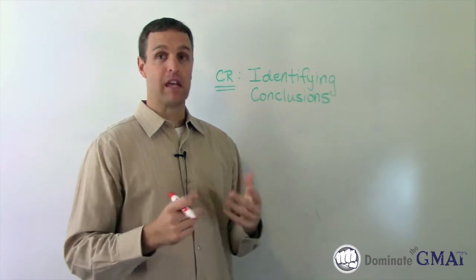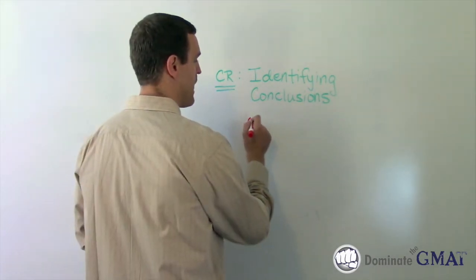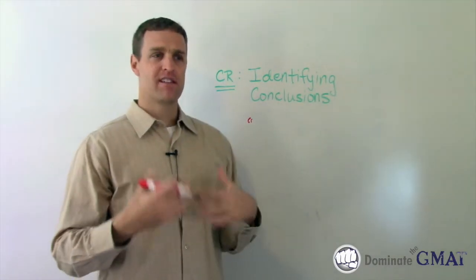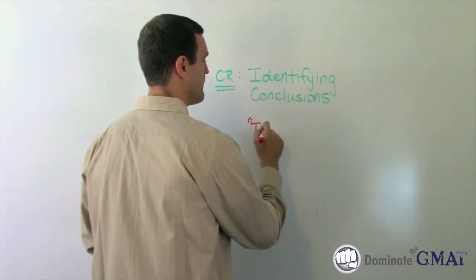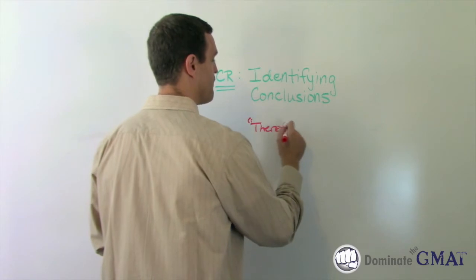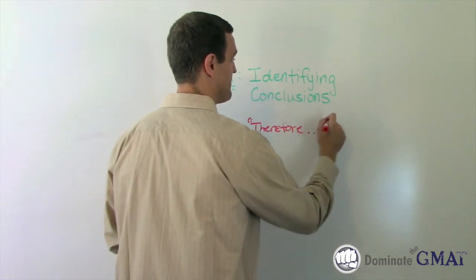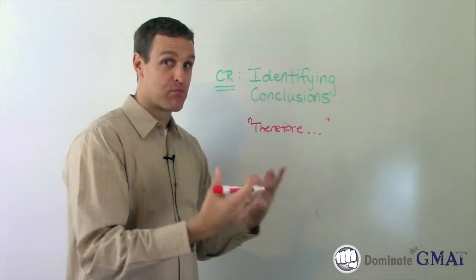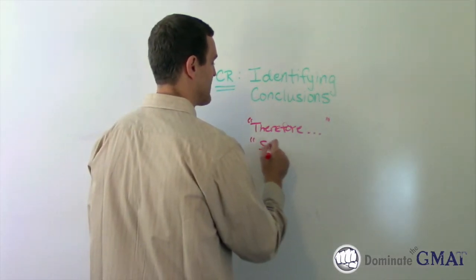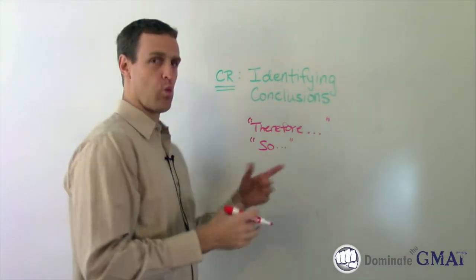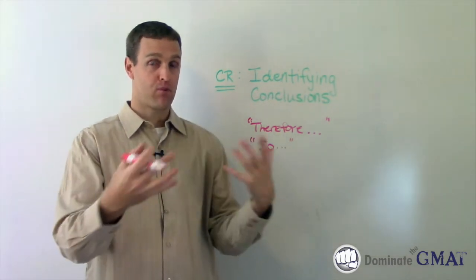Now, sometimes identifying conclusions can be easy, right? Because sometimes, and we teach this, we teach this idea of looking for locator words or tip-off words like therefore. You know, if you see a word like therefore, what comes after that is probably going to be the conclusion, right? It's not rocket science.